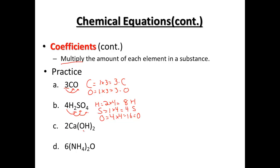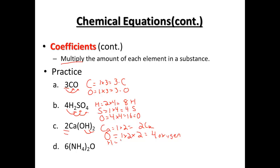For polyatomic ions written in parentheses, such as 2Ca(OH)₂, we're showing two oxygens and two hydrogens for each group. For calcium: one times two equals two. For oxygen: one oxygen times the two in parentheses times the two out front — one times two is two, times two gives us four oxygens. For hydrogen: one times two is two, then times the coefficient two out front gives us four hydrogens.